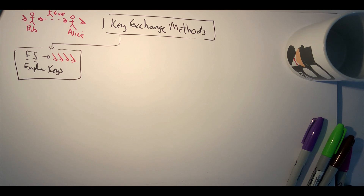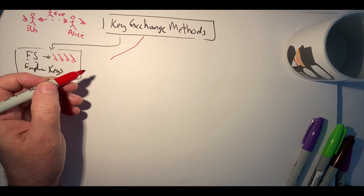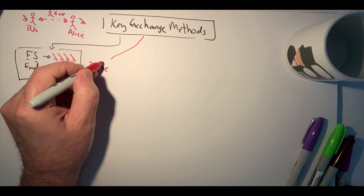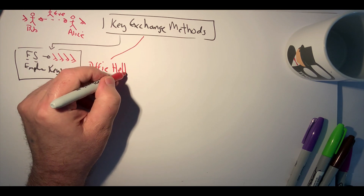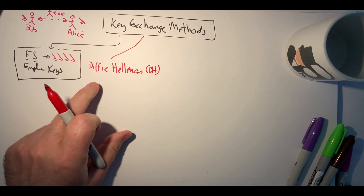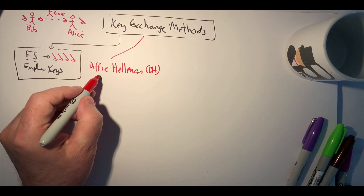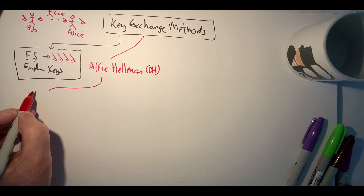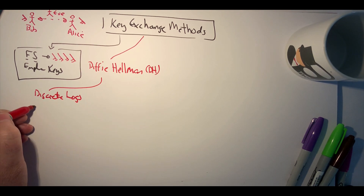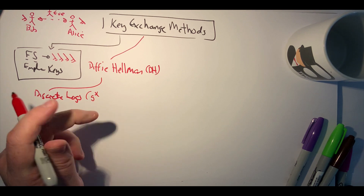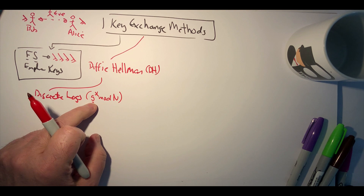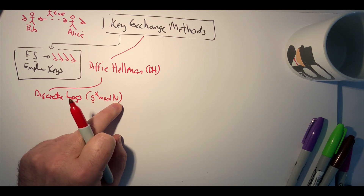One of the most fundamental methods is the Diffie-Hellman key exchange. With this, we use discrete logarithms, which are in the form g to the power of x mod n, where g is a generator and n is a prime number.